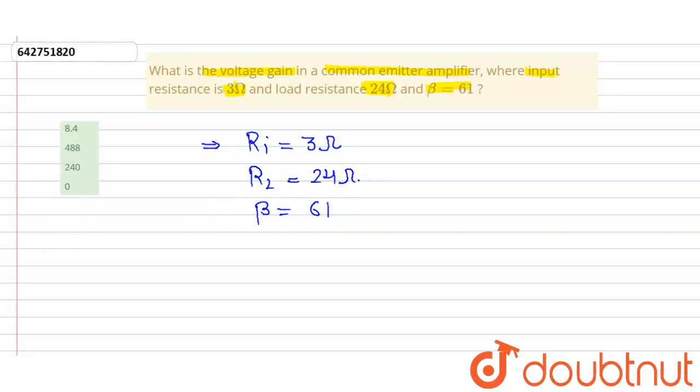To calculate the voltage gain in a common emitter amplifier, we know that Av is equivalent to beta times RL, the load or output, divided by the input RI.